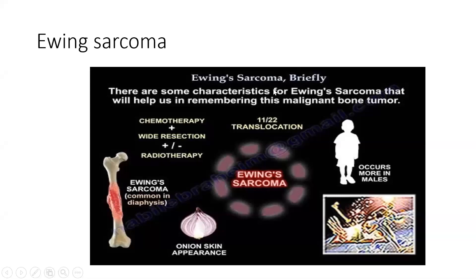Ewing's sarcoma has an 11;22 translocation. It is more common in males. It has an onion skin appearance, and it is more common in the diaphysis.